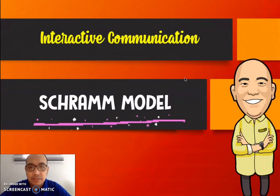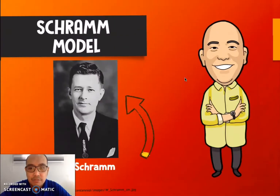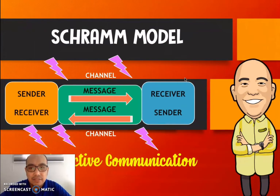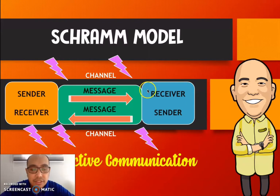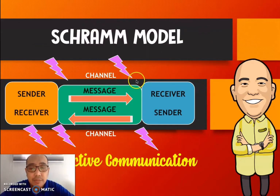Another model of communication is what we call interactive communication — the Schramm model. The proponent of this model is Wilbur Schramm. According to Wilbur Schramm, communication is interactive, meaning the sender gives the message to the receiver, and then the receiver decodes the message and also becomes a sender by sending a message back to the previous sender. So the sender is also a receiver and vice versa — there is a two-way process. There is feedback or response, though noise is still present, and the field of experience of both sender and receiver is present in this type of model.